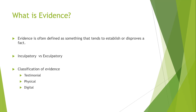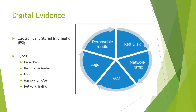We have a few types of evidence classifications: testimonial, physical — something more tangible — or digital evidence. Most of what we are focusing on in this class is digital evidence. The main types are going to be things like fixed disk or removable, memory or RAM, and logs. Network traffic is going to be the focus of our digital evidence for this course, specifically network traffic analysis.